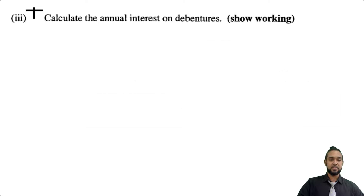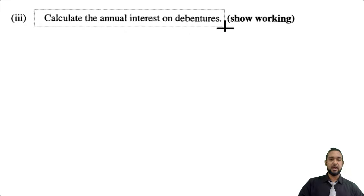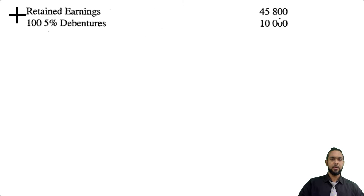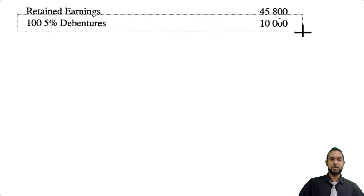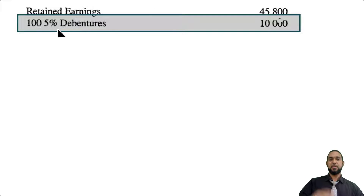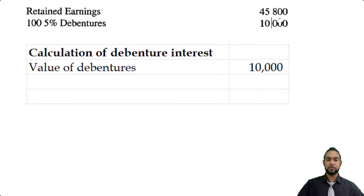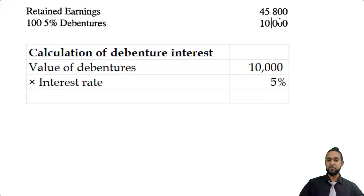The third part says to calculate the annual interest on the debenture. If you go up, we have 5% debentures — 5% being the interest rate — and we multiply that by the value of the debentures outstanding. The value of debentures is $10,000, interest rate 5%, and therefore the interest expense is $500.